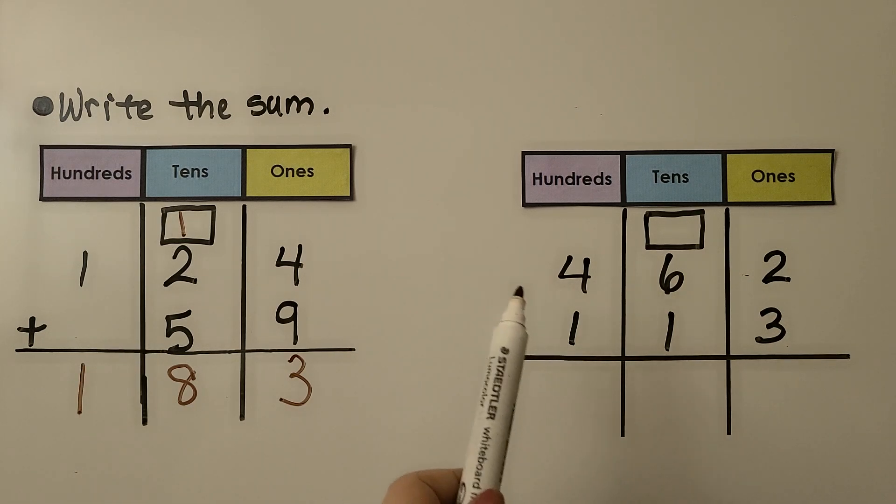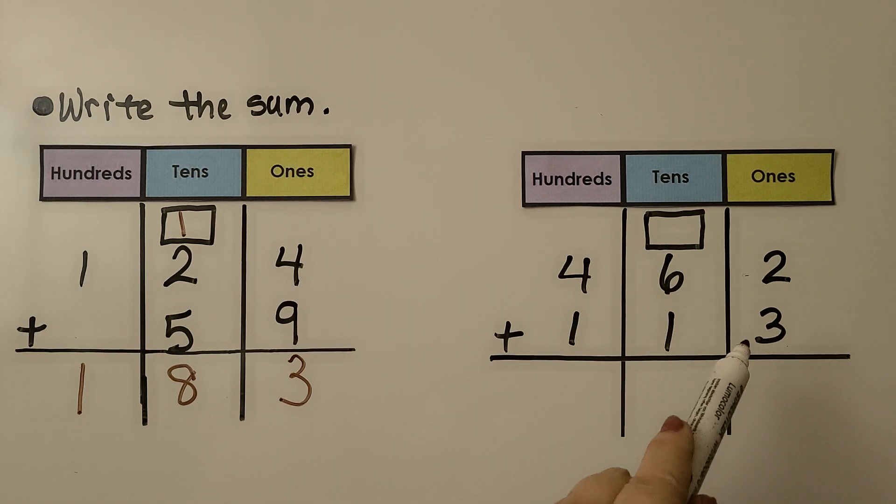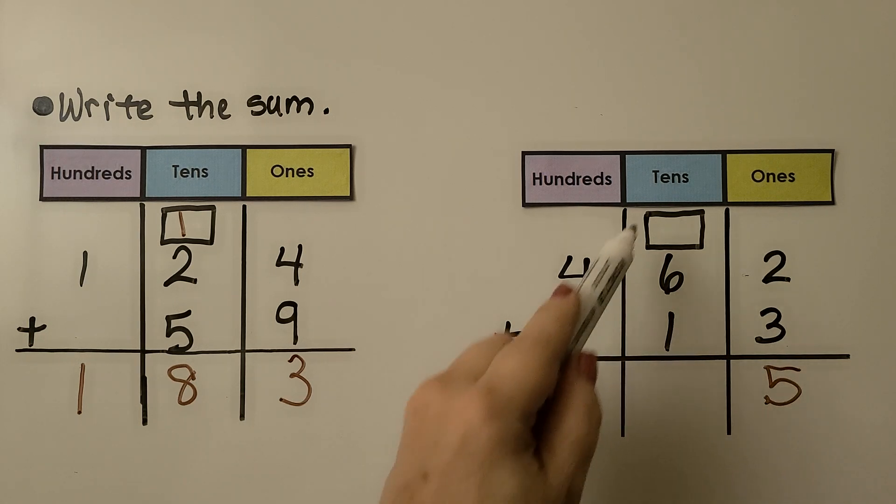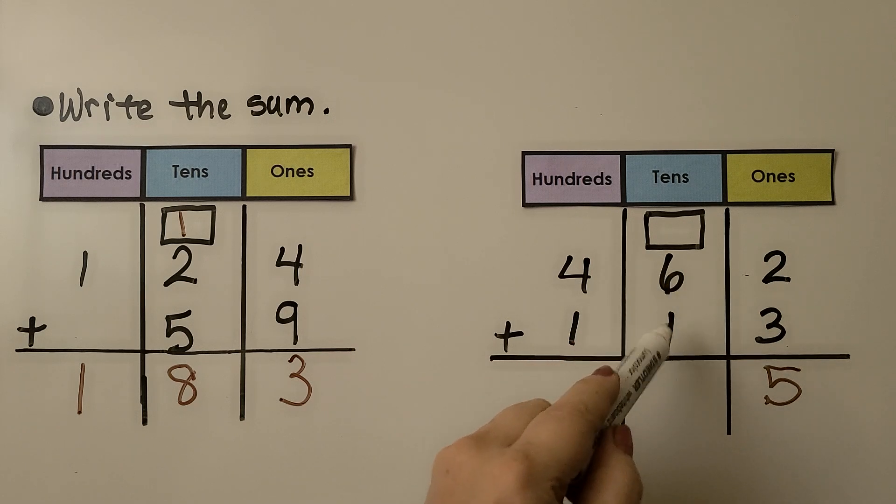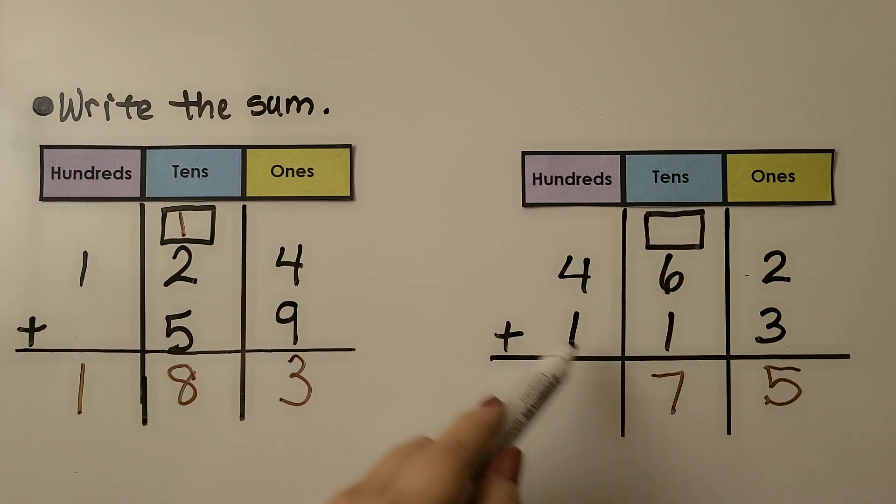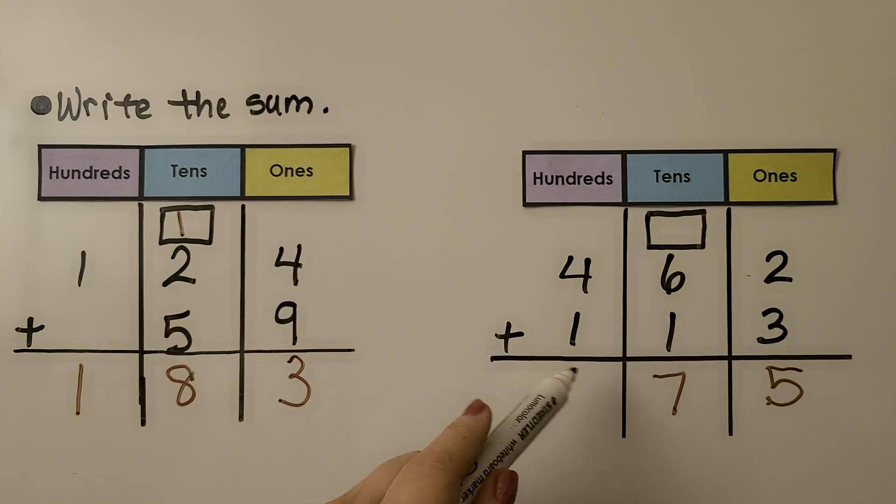Now for this one, we have 462 plus 113. We look at the ones place and we have three plus two. That's five. We don't need to regroup. So we have nothing in the box. We just have six tens and one ten, which is seven tens. Then we have four hundreds plus one hundred is five hundred. It's equal to 575.